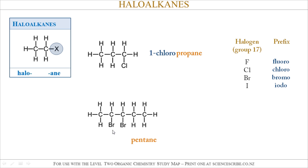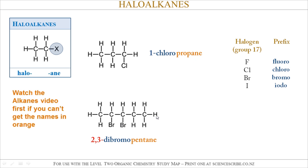In the second example, I have two bromines, so that corresponds to bromo. To show that it's got two bromines, I put di in front, so it's dibromopentane, and those are at positions two and three on that chain, so it's 2,3-dibromopentane. Now, if you can't get the part of the name in orange, go back and watch the alkanes video on how to do that.